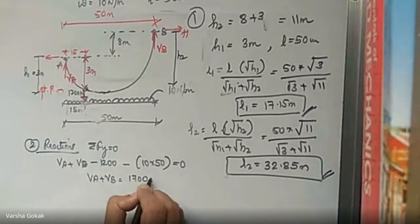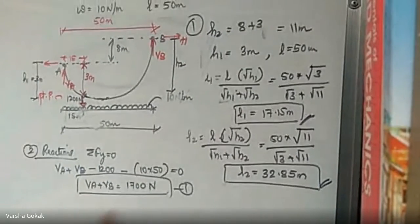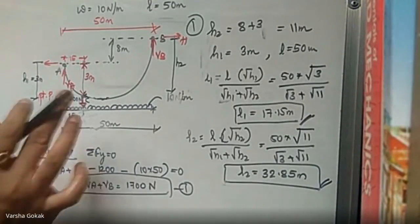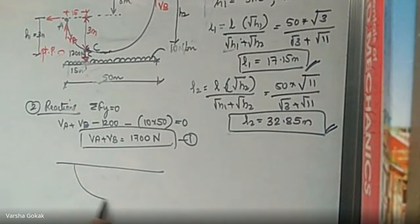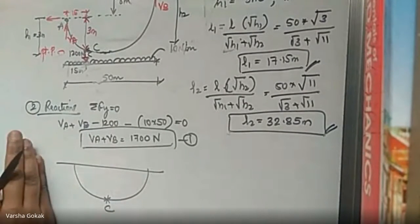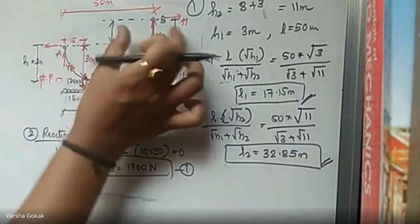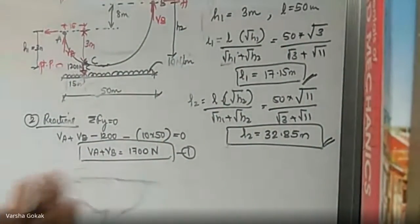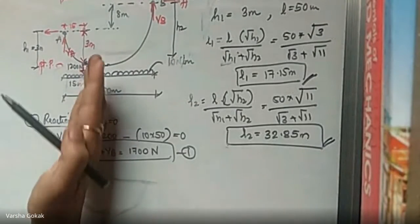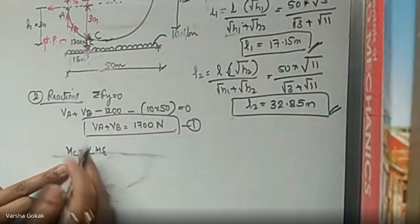Now taking moments at point C. Because both supports are at different levels, we must take moment at C from the left-hand side and separately from the right-hand side. On the left-hand side we have VA, H, the UDL, and the point load. The distance to C from the left is L1 equals 17.15 meters, not the 15-meter distance of the point load.